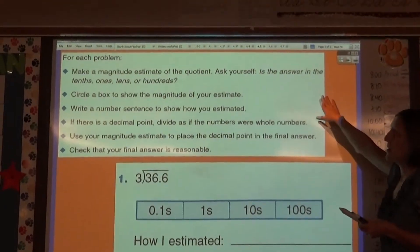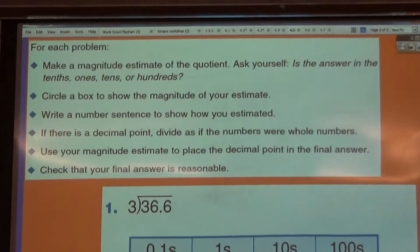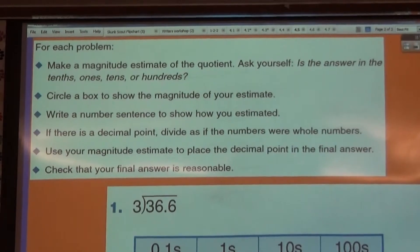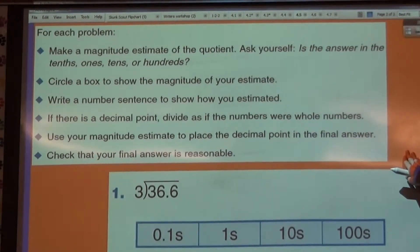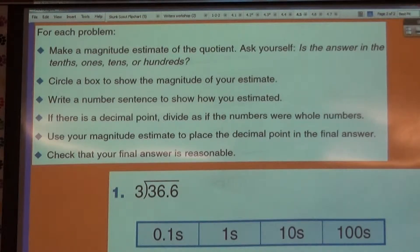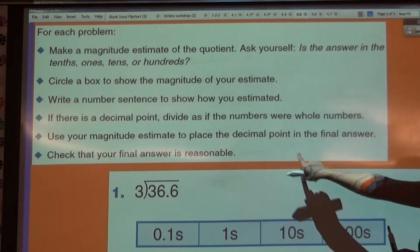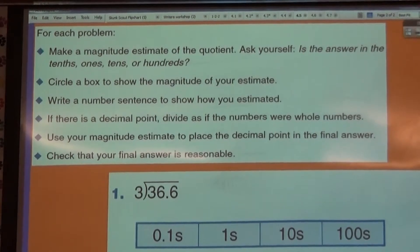For each problem, you're going to make a magnitude estimate of the quotient. Ask yourself: is the answer in the tenths, ones, tens, or hundreds? Circle the box to show the magnitude of your estimate. Write a number sentence to show how you estimated. If there's a decimal point, divide as if the numbers were whole numbers. Then we'll talk about how to put that decimal point back in your final answer, and check to make sure your final answer is reasonable.